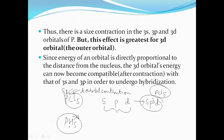PCl5 does exist. But PH5 does not exist because hydrogen is not as electronegative as chlorine. Since hydrogen cannot draw electrons from phosphorus, there is no d-orbital contraction, and therefore PH5 does not exist.